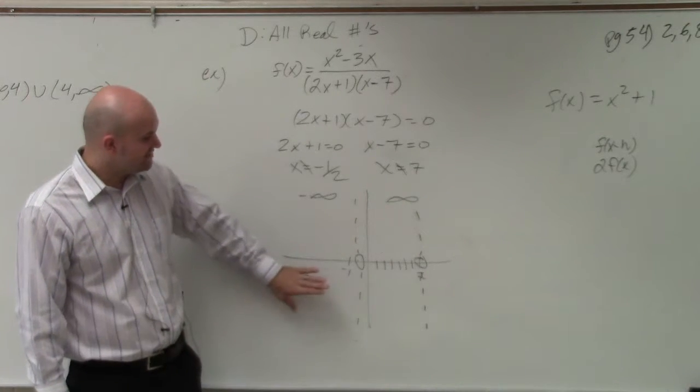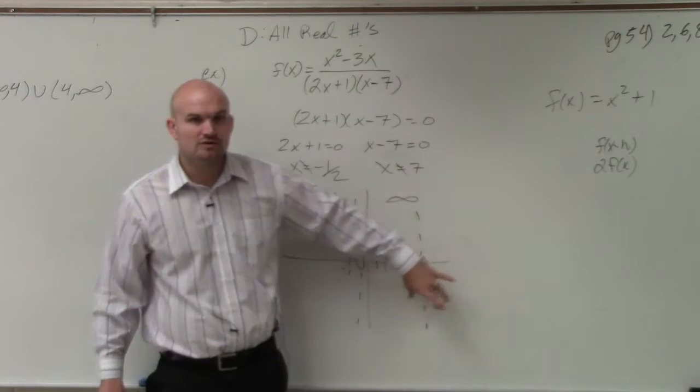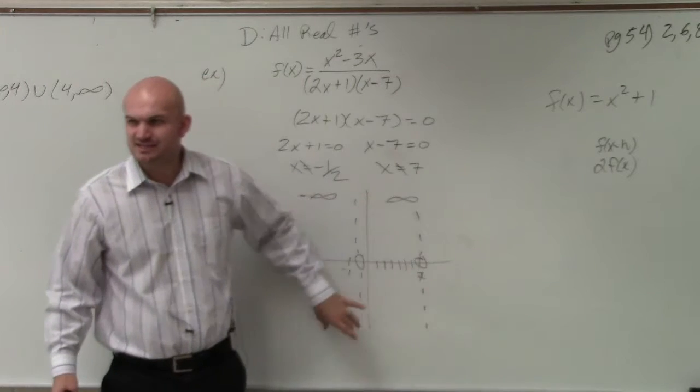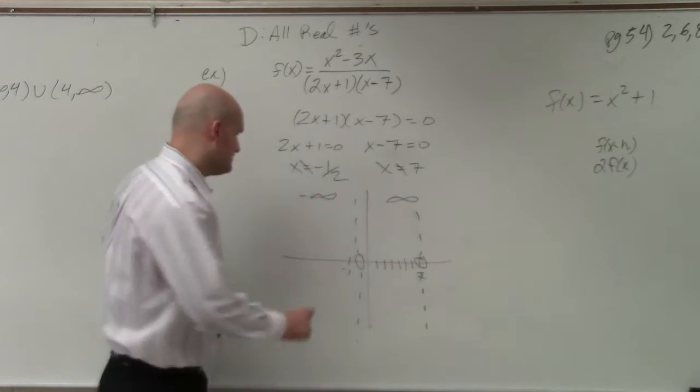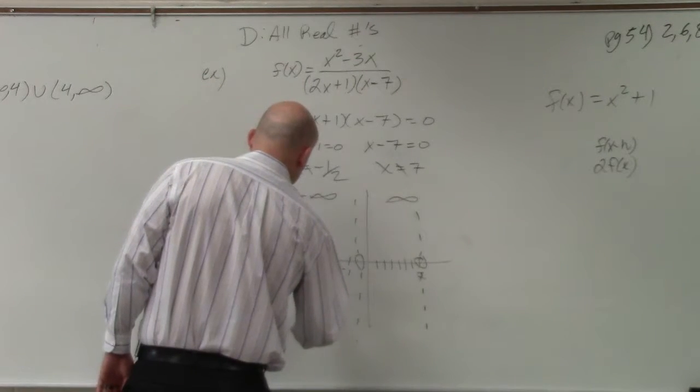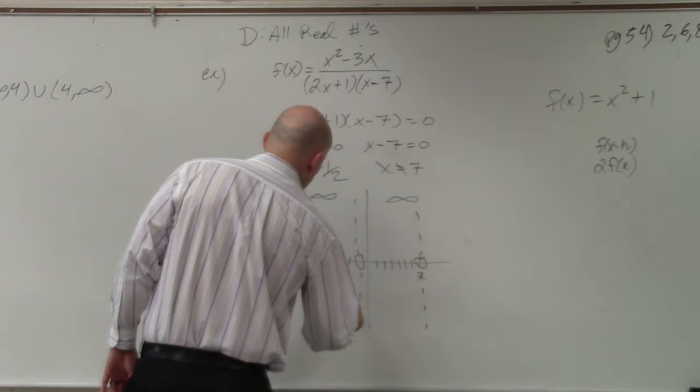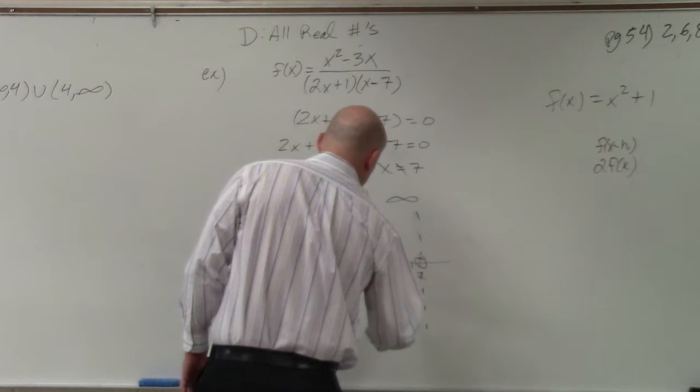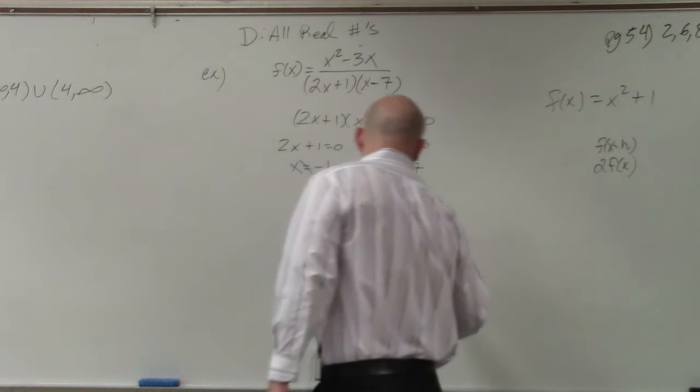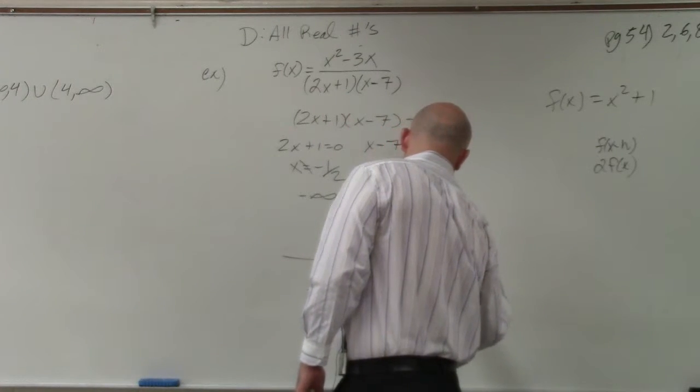So what I do is I just find an interval for each of these sections. You guys kind of see how there's three sections? So this first one is negative infinity to negative 1 and 1 half, negative 1 half to 7, and 7 to infinity.